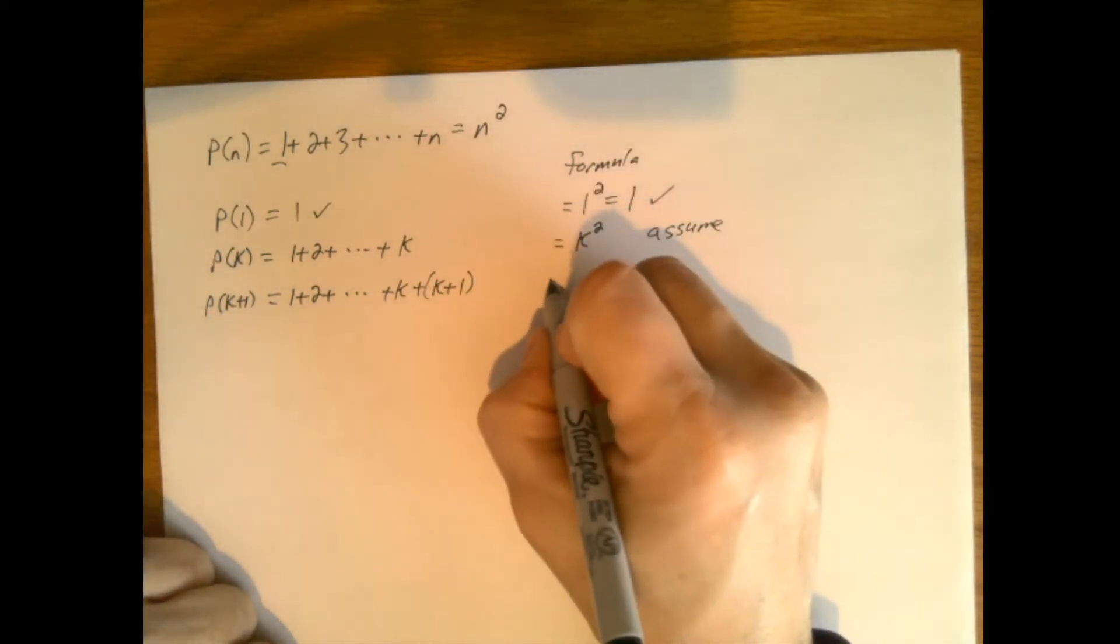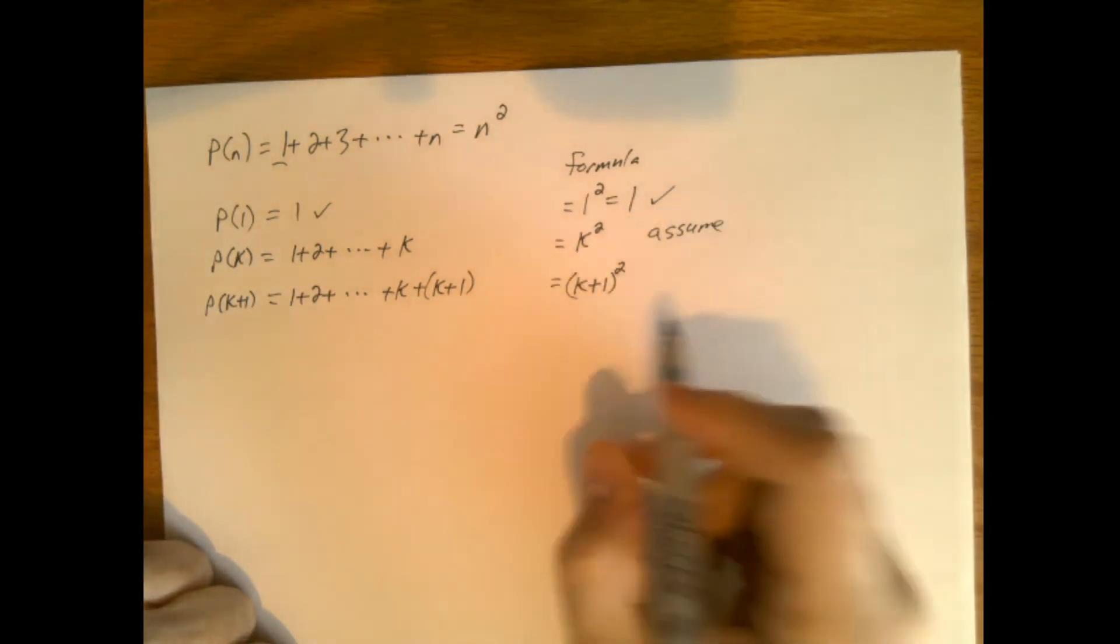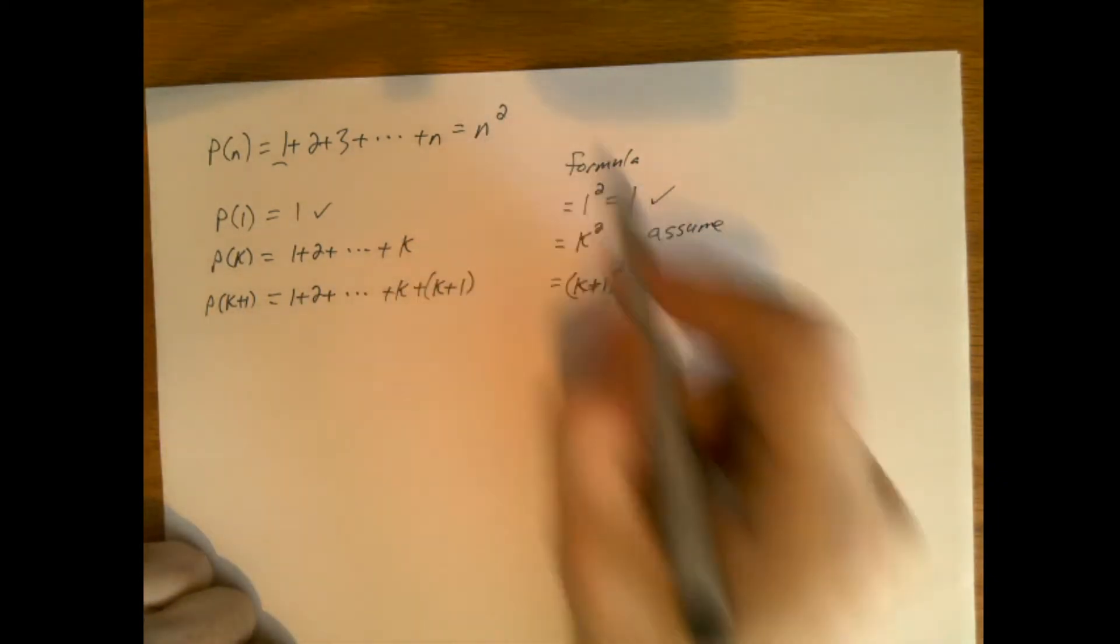The formula says this will be equal to k plus 1 quantity squared. So now n is equal to k plus 1 so we square it, we get this right here.